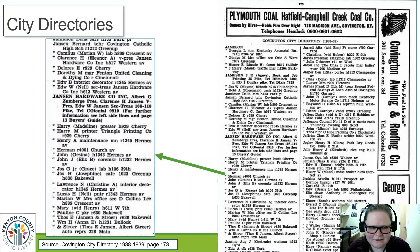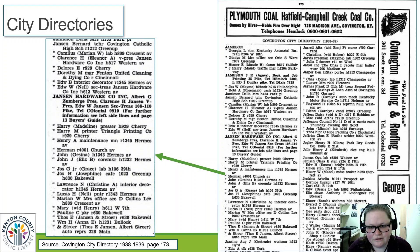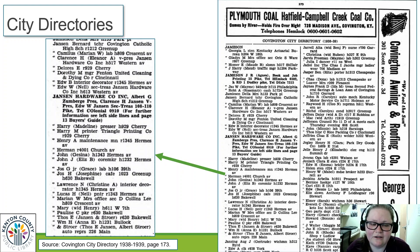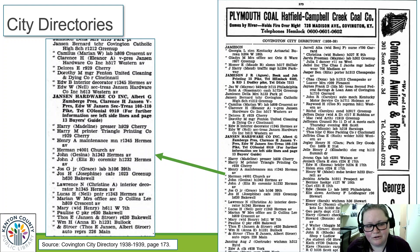City directories, while we don't think of them as necessarily property records, are property-related because they tell us where our ancestors lived, but they also tell us wonderful genealogical data about them. Please go through city directories and get to know your ancestors through those directories over time, because you'll be able to build a timeline. I love timelines — city directories are a great way to fill in gaps.